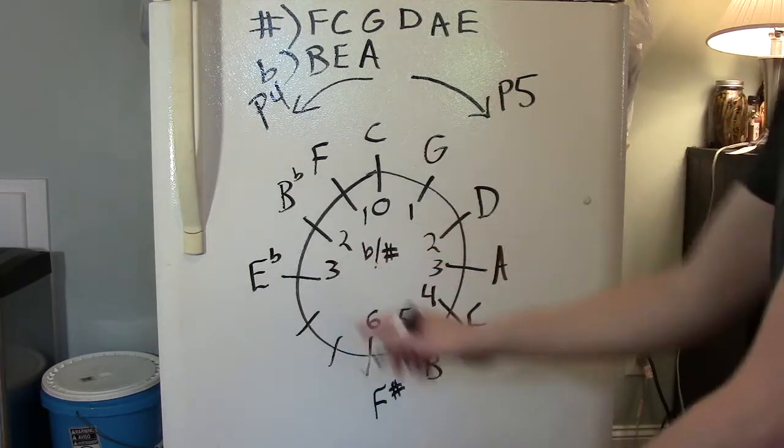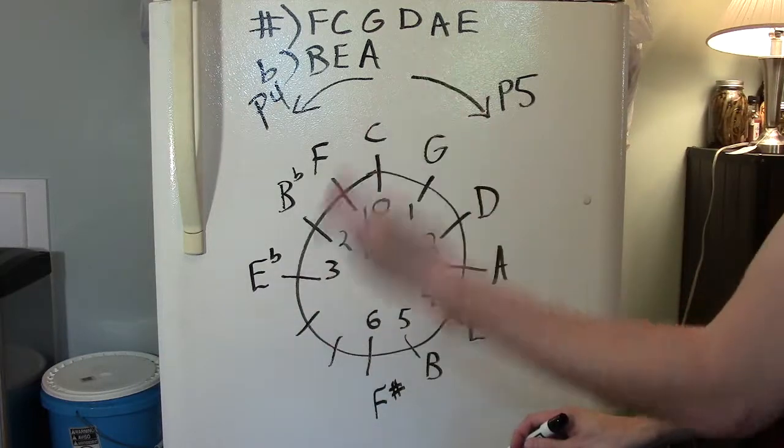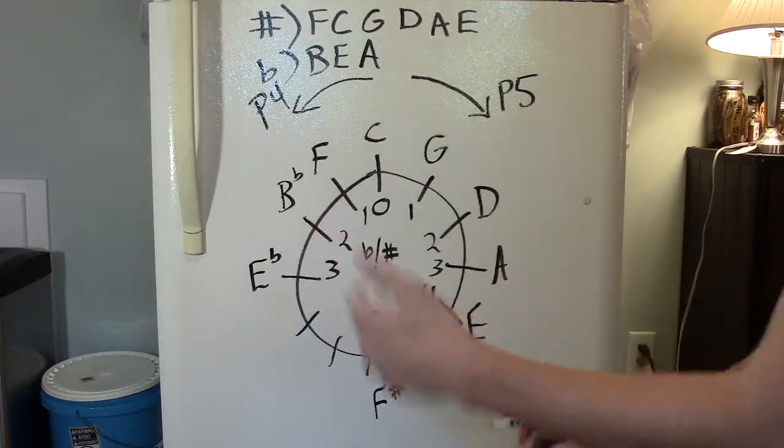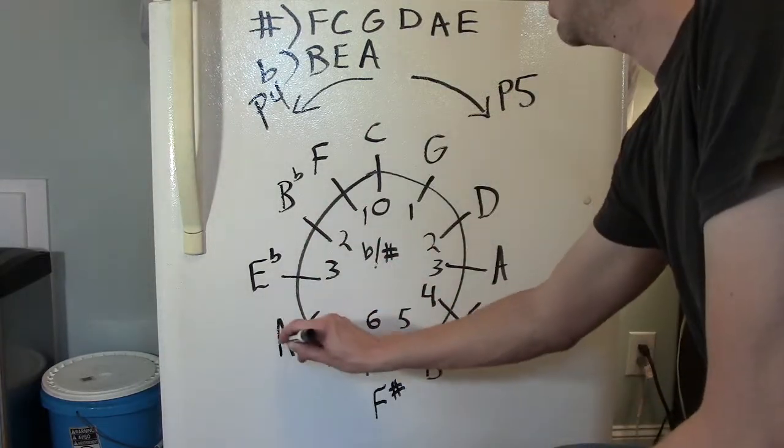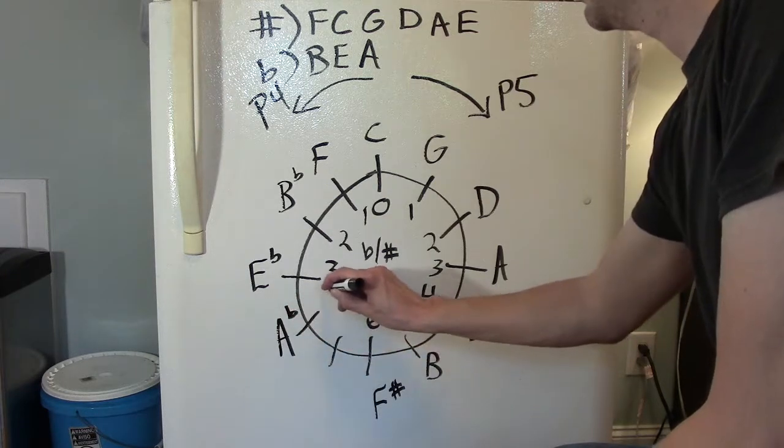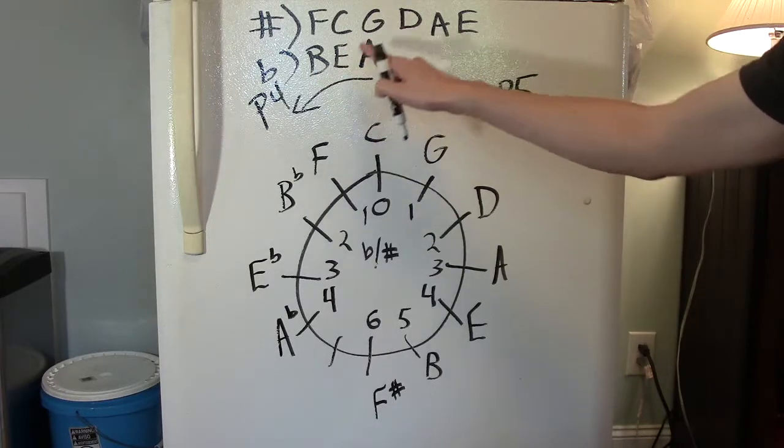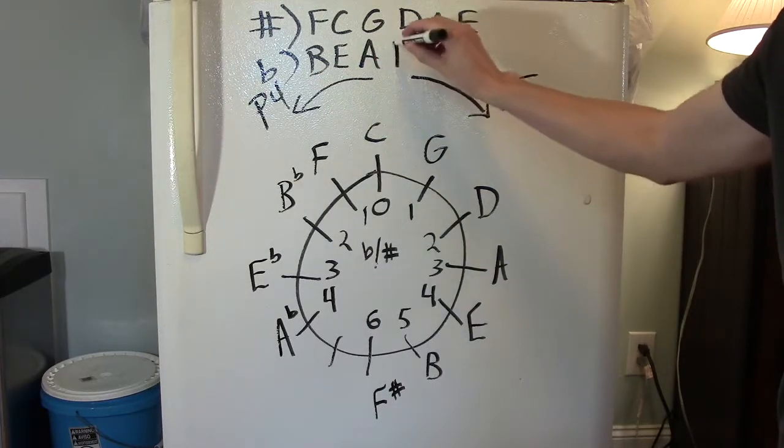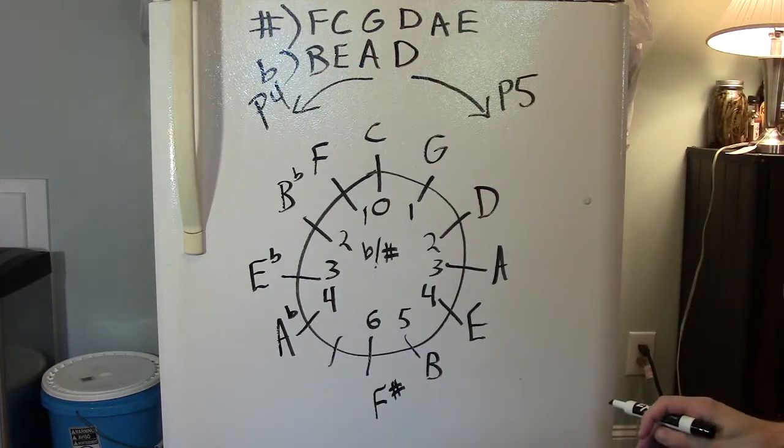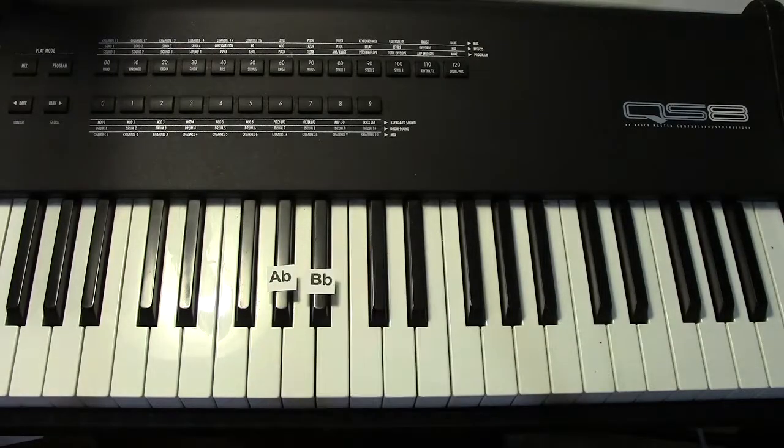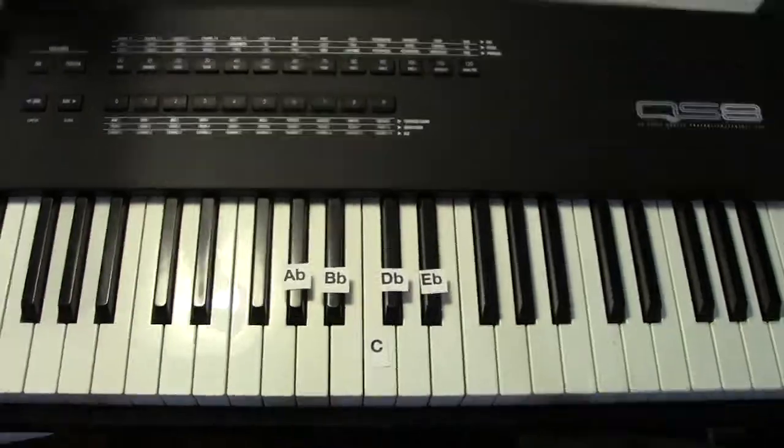Let's keep this perfect fourth party going. E flat, F, G, A flat. The key of A flat major has four flats in it. They are B flat, E flat, A flat, and D flat. A flat, B flat, D flat, E flat.